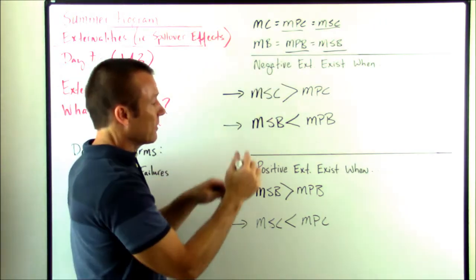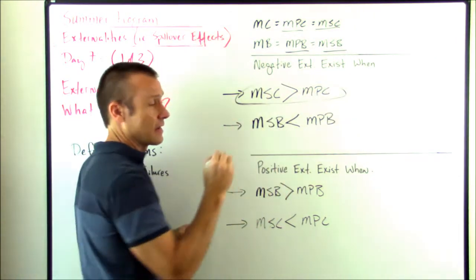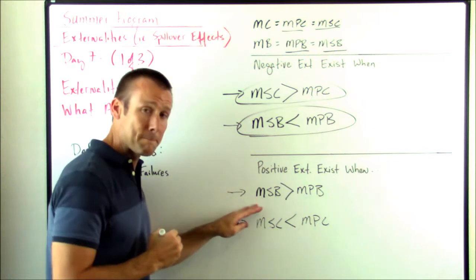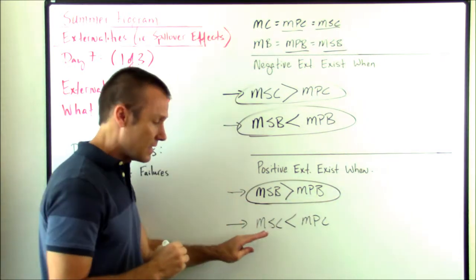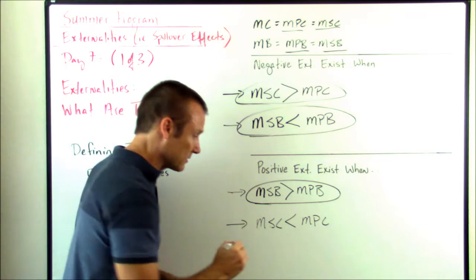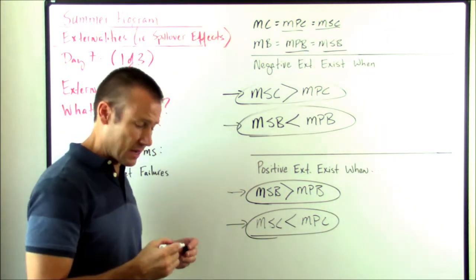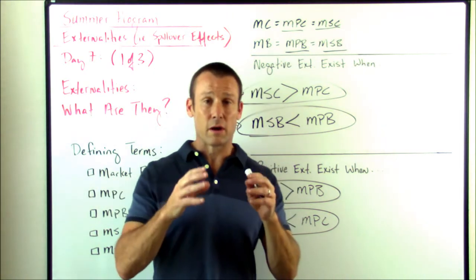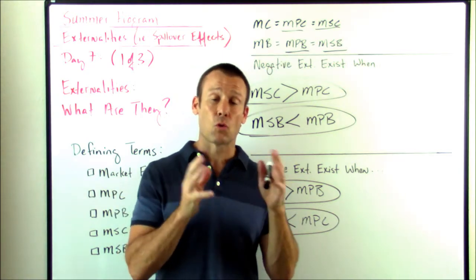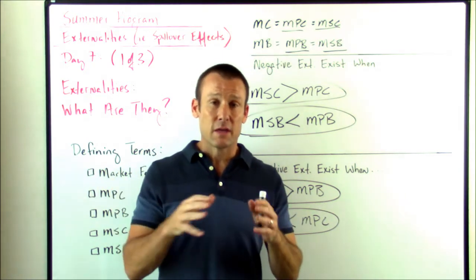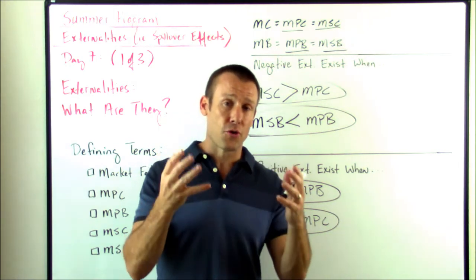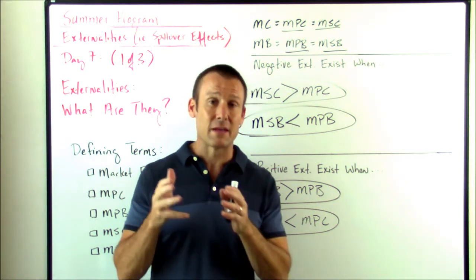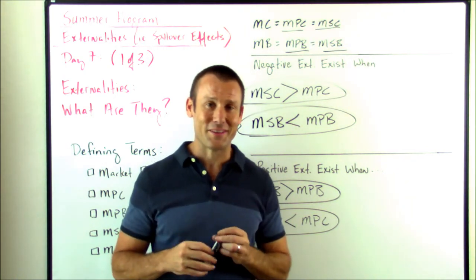To summarize: negative externalities exist from production when MSC > MPC; negative externalities from consumption when MSB < MPB; positive externalities from consumption when MSB > MPB; and positive externalities from production when MSC < MPC. That is our introduction to externalities — spillover effects — situations where costs or benefits are spilling over into non-market participants, people we call third parties, changing the relationship between private cost and societal cost, private benefit and societal benefit. I hope that made sense to you — we'll see you in the next video.